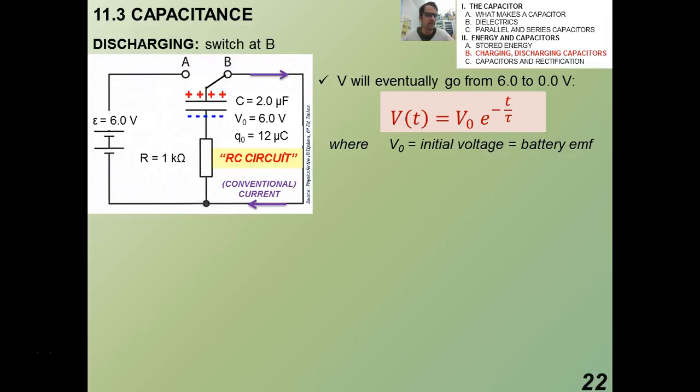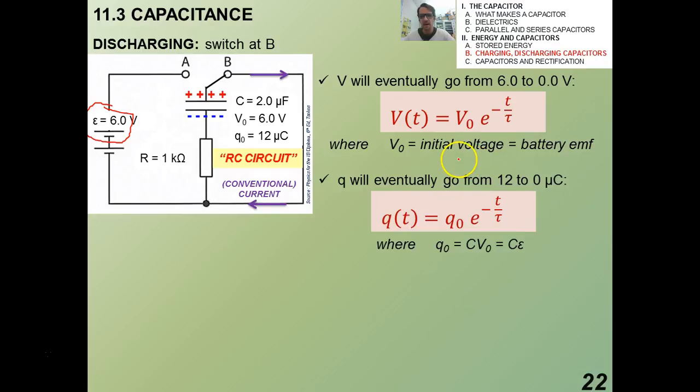The capacitor, of course, stays the same because the capacitance, remember, is just a function of the physical property of the device. But V will eventually go from the maximum voltage, which was 6 volts because of that EMF of the battery, from 6 volts to 0 volts. And the way that it does is it's an exponential decay. And V_0 here is the initial voltage, which is the battery EMF.